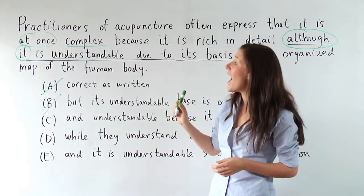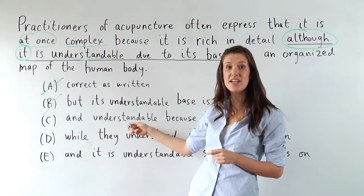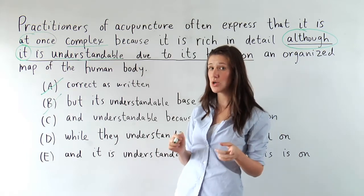How about C, at once, complex, and understandable. Well that looks good. I've got adjective to adjective, so I'm definitely going to hold on to C.